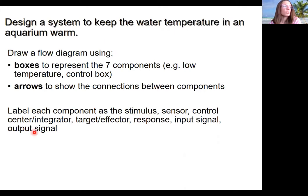So you're going to draw boxes. This is going to be a flow diagram. You're going to be drawing these for feedback loops often in this class. Seven components of this diagram of the system. Low temperature is your stimulus. That is what you need to address. You've got an aquarium with some fish in it. They are tropical fish and they're too cold. So you need to find a way to have your aquarium measure that temperature and warm it up when it needs to. So the different components I've given to you here. Stimulus, sensor, control center is the same as an integrator.